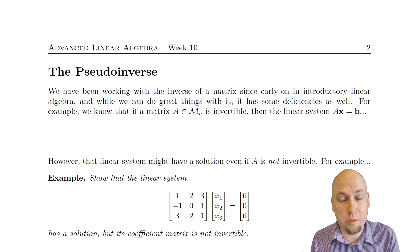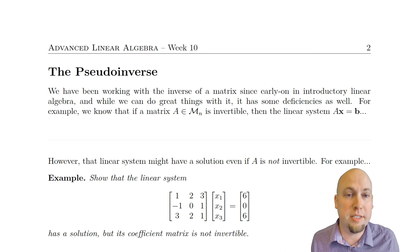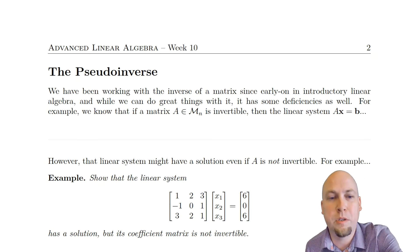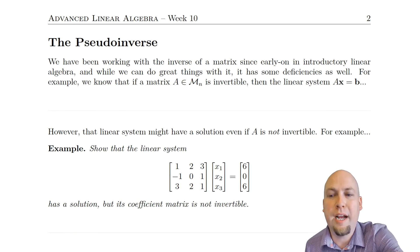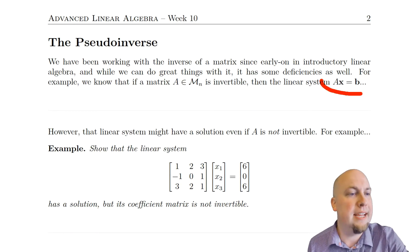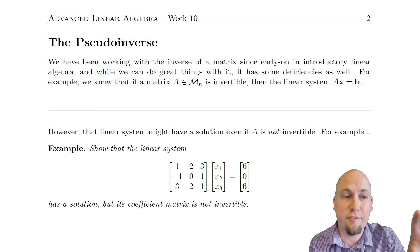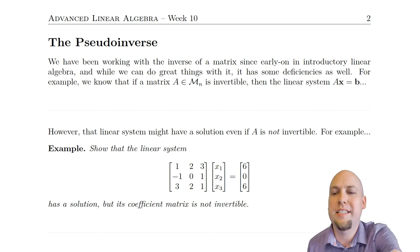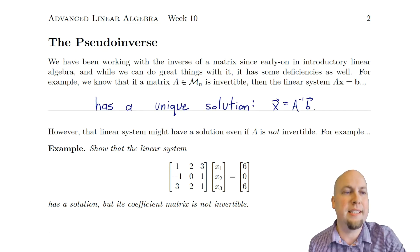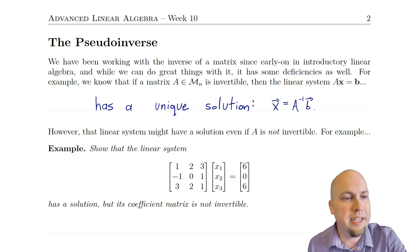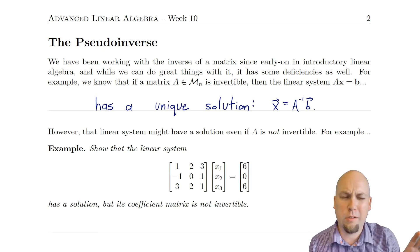The pseudo-inverse exists even for rectangular matrices. Here's the motivation: recall that if you have a linear system AX equals B and the coefficient matrix is invertible, that tells you something nice about the corresponding linear system — it has a unique solution, and that unique solution is just A inverse times B.